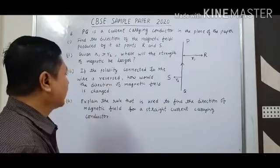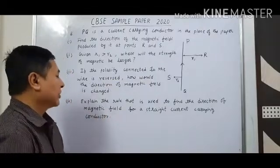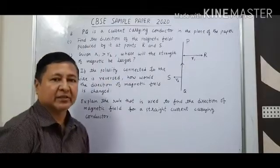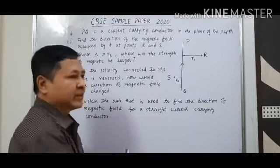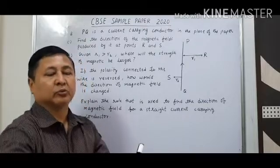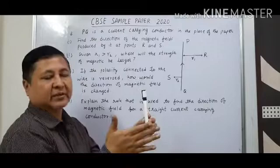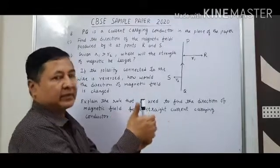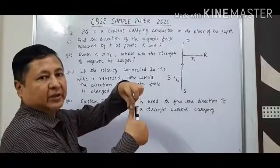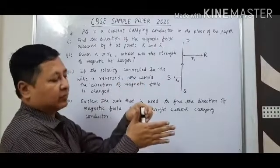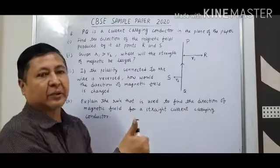The last question: explain the rule used to find the direction of magnetic field for a straight current-carrying conductor. The rule is the right-hand thumb rule. Hold the current-carrying conductor in your right hand such that the thumb shows the direction of current, and the fingers wrapping around it show the direction of the magnetic field.